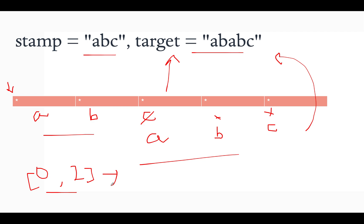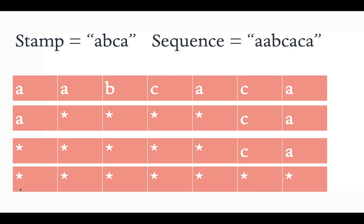My first approach was a DFS fashion — trying all permutations of stamping positions recursively until all DFS permutations are exhausted. But that would be pretty long since all permutations are covered. So instead, I have something smarter. Taking a slightly more complex example: stamp is 'abca' and the sequence is 'aabcaca'. Instead of going in the regular direction with DFS, we will go in the reverse direction.